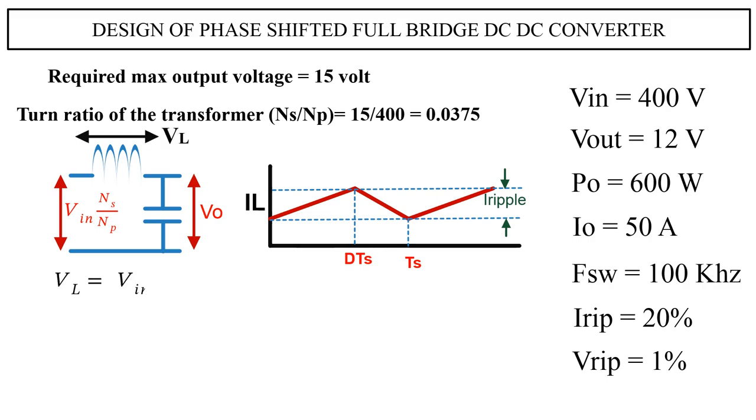From the figure, we can write the voltage drop across the inductor as VL equals VIN times NS/NP minus VO. General equation for inductor voltage is VL equals L times dI/dt. From this equation, we can write the value of inductance L equals VL times dt/dI.